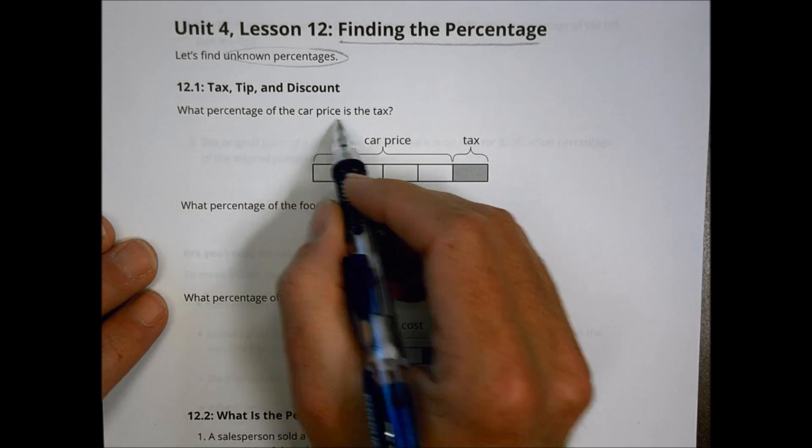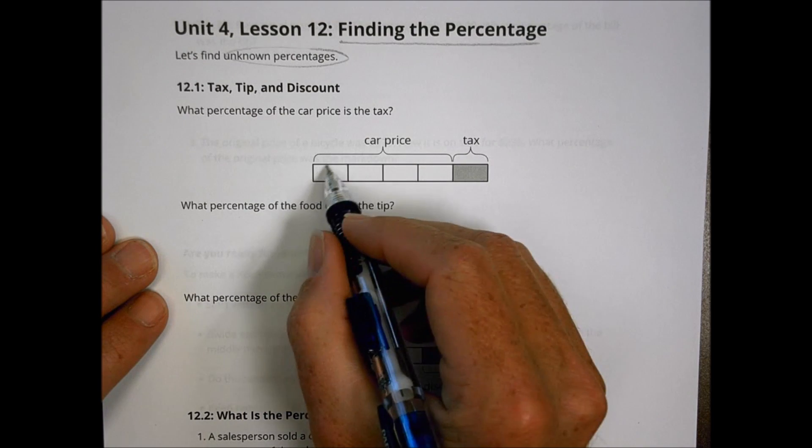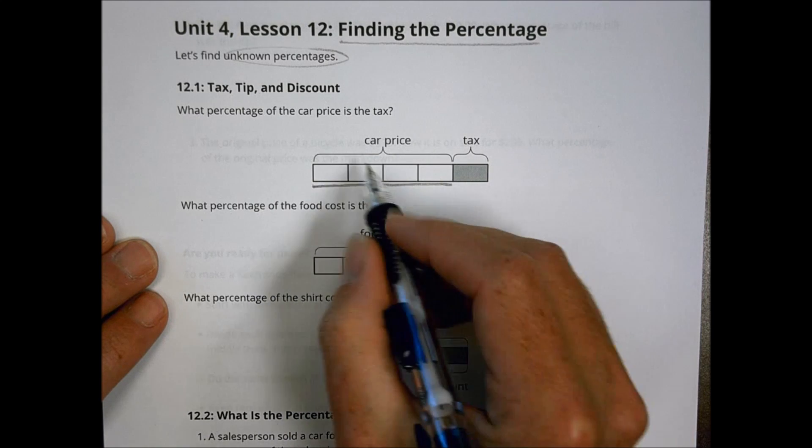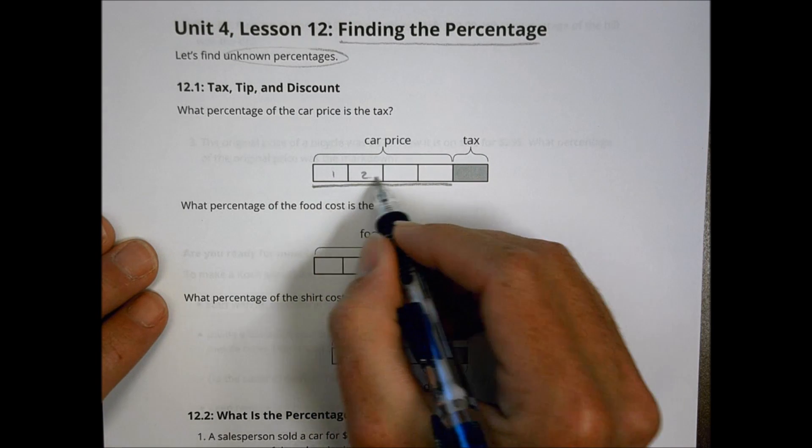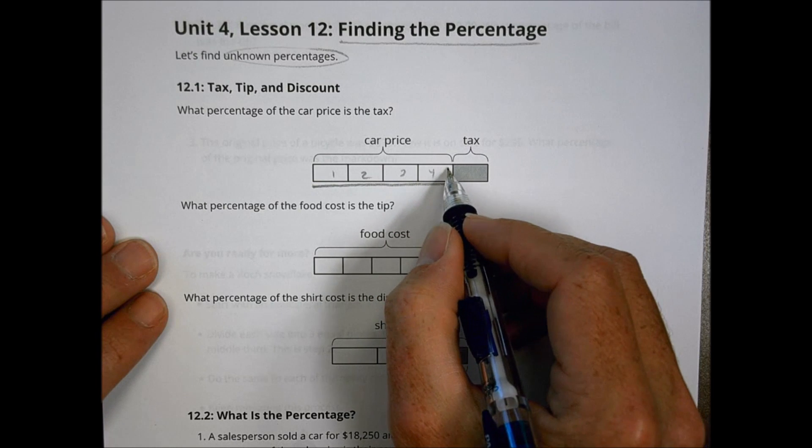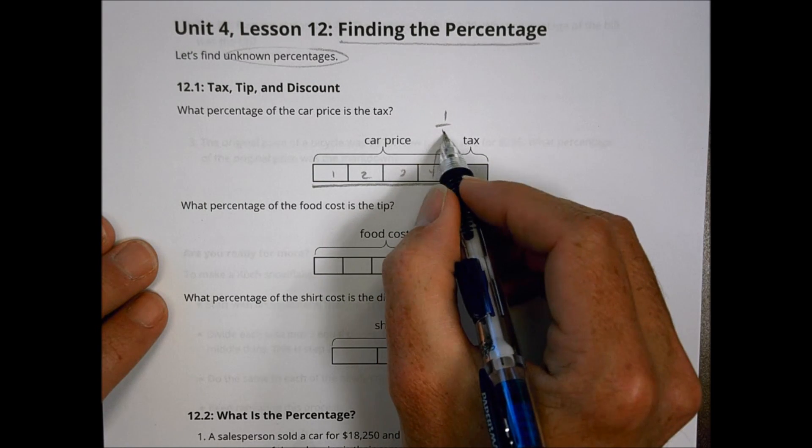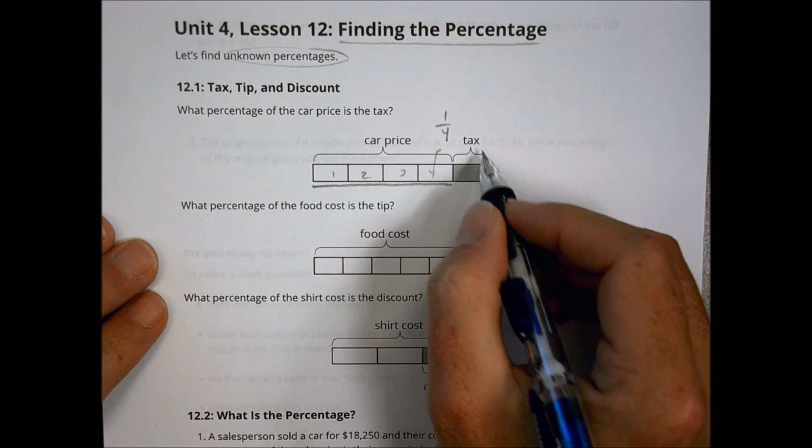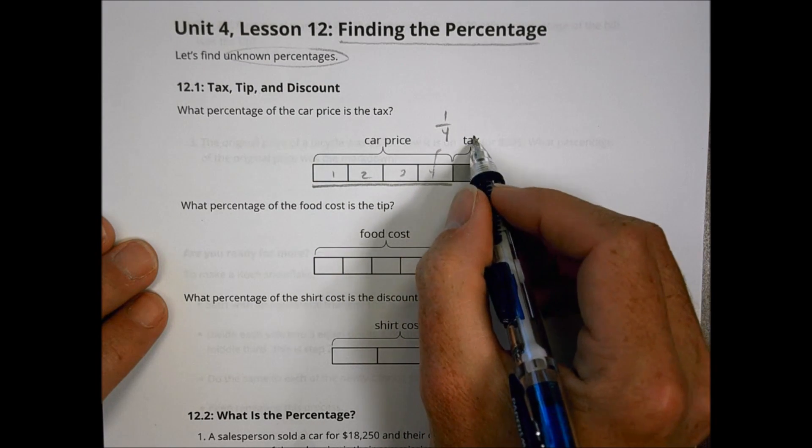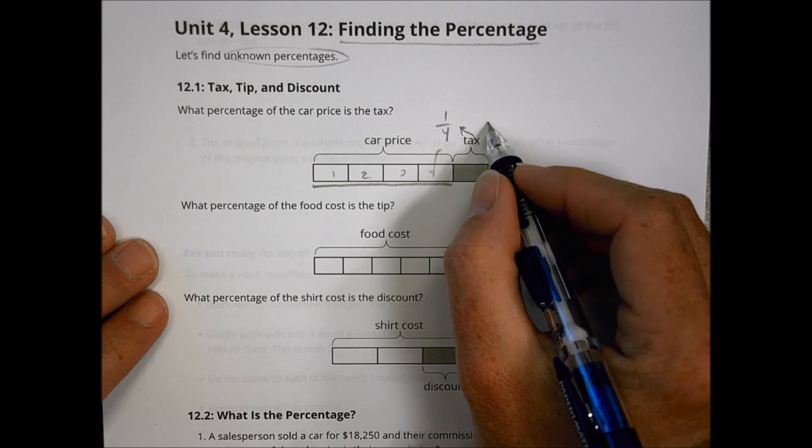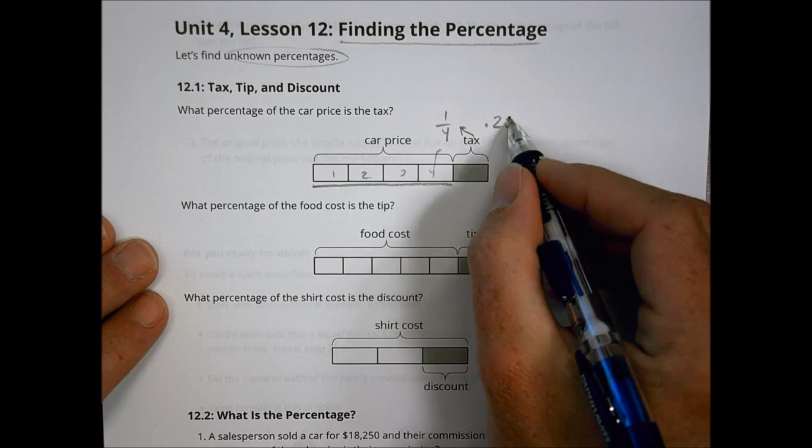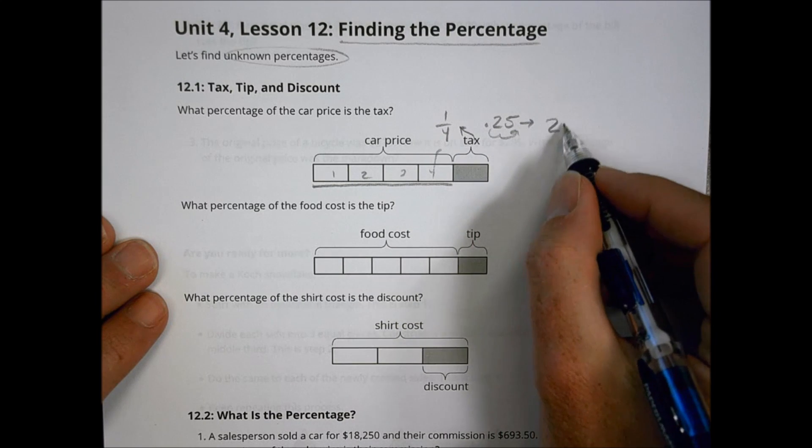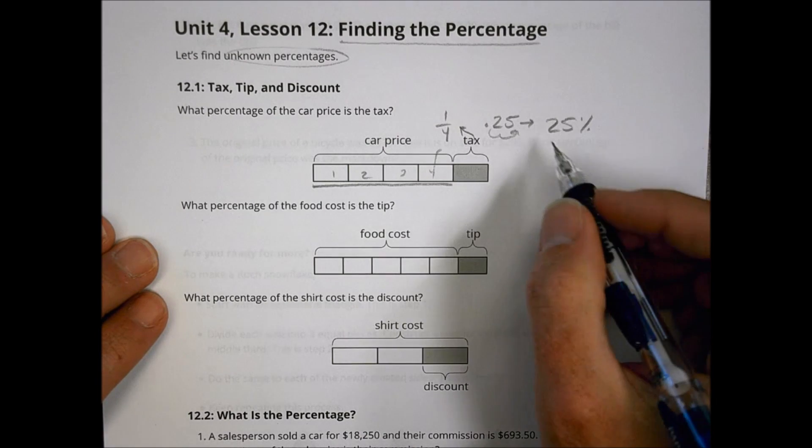So what percentage of the car price is tax? We take a look at this car price. This is the whole car price from here to here. And we can see that it's divided into four sections, one, two, three, four. And so each square would represent, in this case here, one-fourth of the car price. The tax, then, also is the same size, so the tax is also going to be one-fourth. One-fourth can be written as a decimal, as .25, and converted into a percent by moving over two spaces for 25%. So the tax, in this case, would be 25% of the car price.